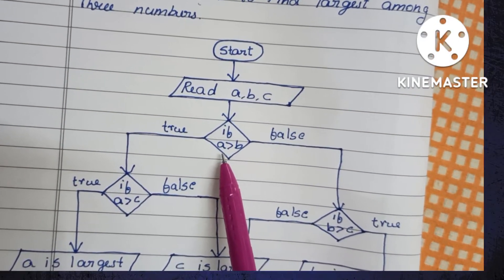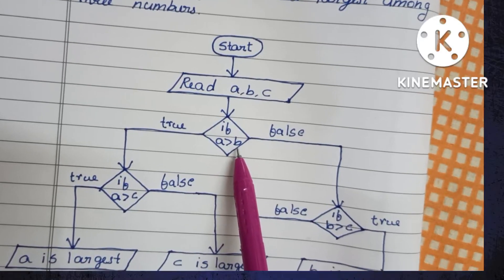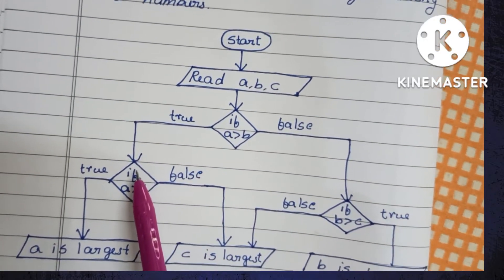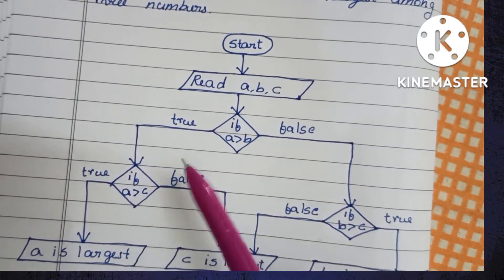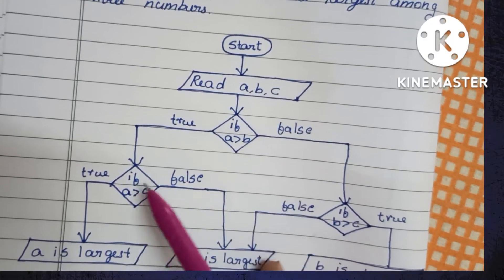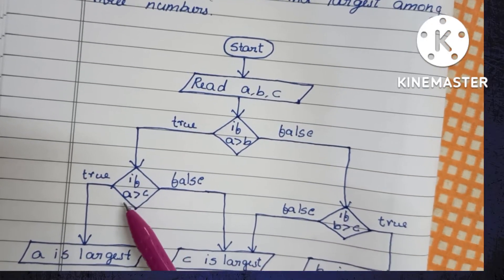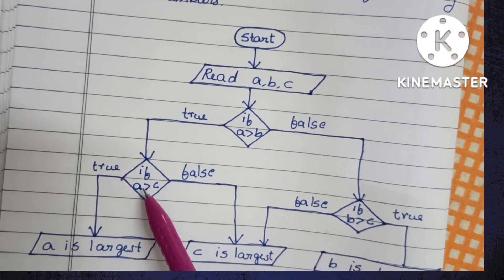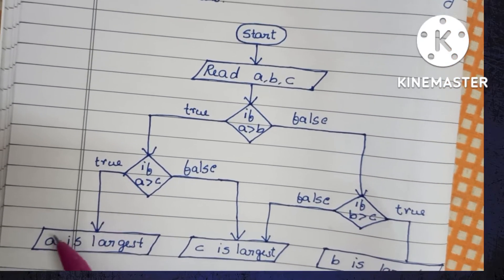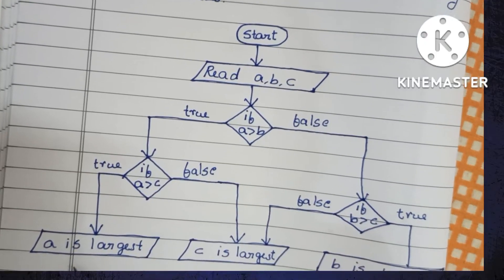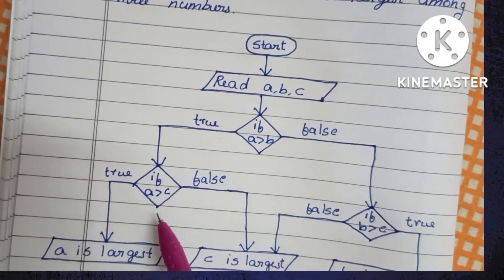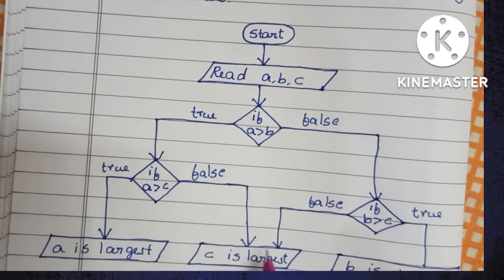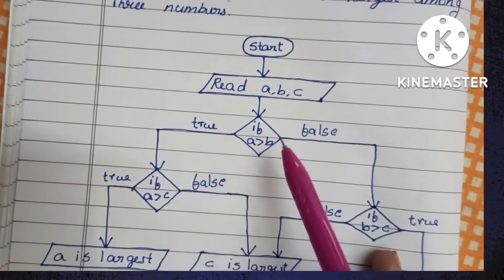Let's see the process. If A greater than B and this condition is true, it will check A against C. If A greater than C and this condition is true, it will print A is largest. If this condition is false, it will print C is largest.